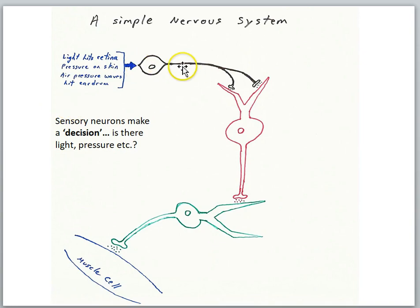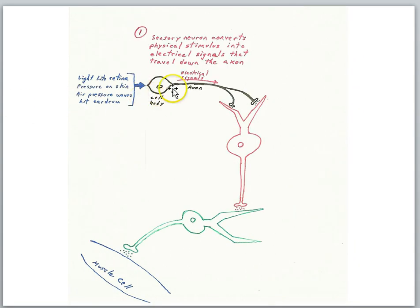So we'll start with the sensory neuron. Now a sensory neuron's job is to sort of make a decision about whether there is some kind of physical stimulus in the environment. It could be light hitting the retina, pressure on the skin, air pressure waves in the ear. So a sensory neuron's job is to transform some kind of physical stimulus into electrical signals that it will send down its axon. We can think of this as kind of a decision. Is there light, pressure, sound, etc.